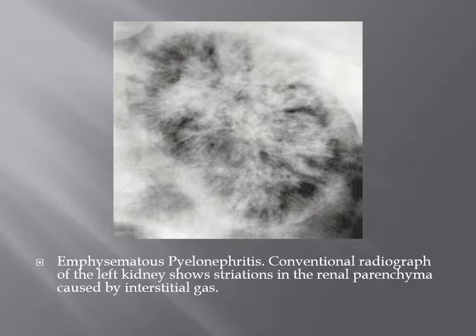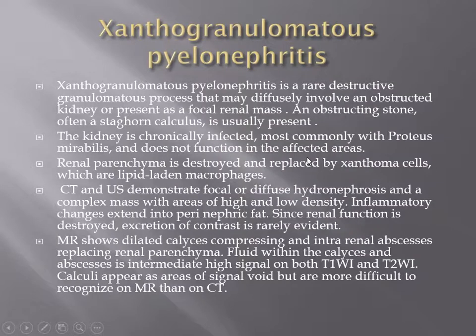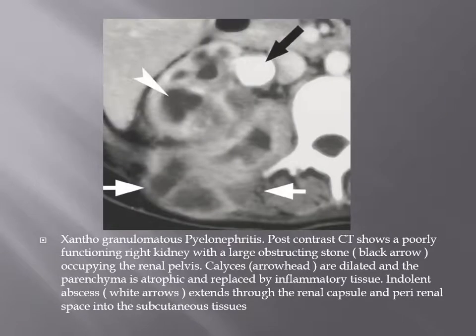A case of emphysematous pyelonephritis on conventional radiograph shows renal striations. Xanthogranulomatous pyelonephritis is a very destructive granulomatous condition associated with a staghorn calculus and chronic infection, forming a mass-like region of inflammatory tissue destroying the kidney — resulting in a non-functioning kidney. This case shows a staghorn calculus and non-functioning kidney with failure to excrete contrast.